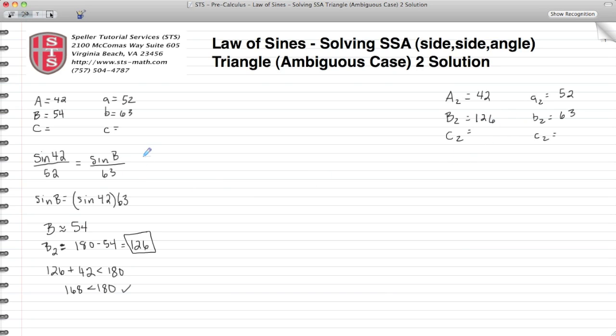Let's shift our focus back to our first solution. To find the measure of angle C, we know that the measure of all the angles of a triangle, when you sum them, they add up to 180. So let's do that here. 42 degrees plus 54 degrees plus C equals 180. When we evaluate, we find out that the measure of angle C is actually 84 degrees. So let's add that to our first triangle.